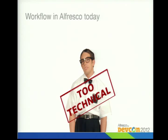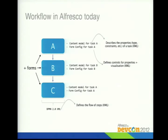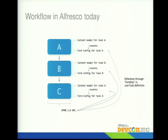The problem with workflow in Alfresco today is that it's just too technical. Suppose you have a three-step process A, B, C — each step with a form. To do this today in Alfresco you have to write a BPMN 2.0 XML file, then for each task you have to write what we call a content model type defining your properties and constraints, then you need to write a form config referencing those properties, all of which are then referenced from the BPMN 2.0 file. It's like a big spiderweb of references, and if you make a typo it's very hard to find.